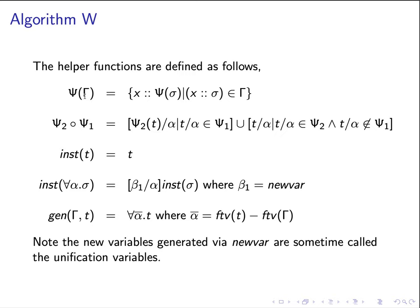For the helper functions: we can apply a type substitution to a type environment by applying the substitution to all the right-hand sides of all the variable-type pairs in gamma. For substitution composition, we first apply all possible substitutions from psi_1, then apply psi_2 to all the types inside, and then union with all the substitutions in psi_2 that do not exist in psi_1.